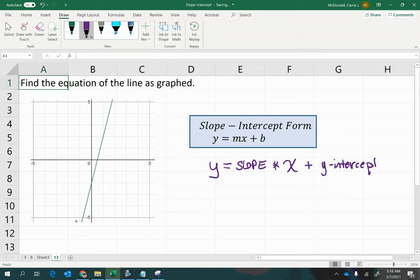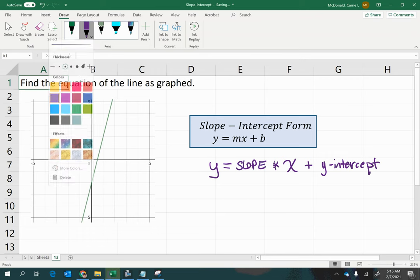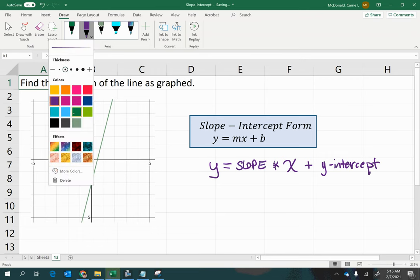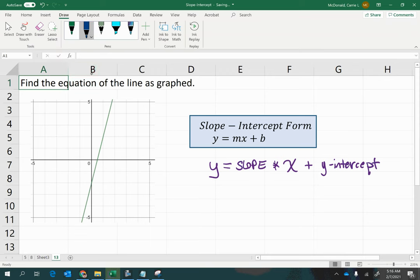So what do we mean by y-intercept? The y-intercept is the place on the y-axis where the line crosses the graph. So let's label the y-axis, which is right here on this vertical line, and the x-axis is right there.